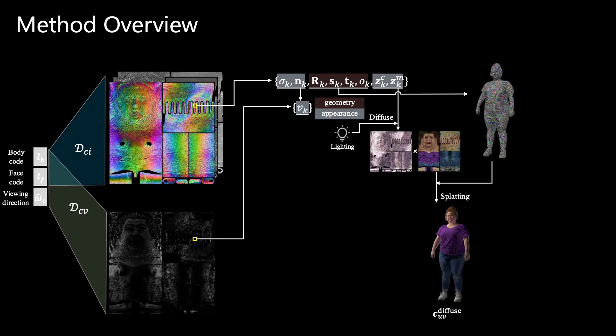To render the diffuse appearance, we learn a set of light transport coefficients that can be efficiently combined with known light sources to compute the diffuse shading. The diffuse shading is multiplied with learnable albedos to produce per-Gaussian diffuse color, which is subsequently rasterized to screen space.